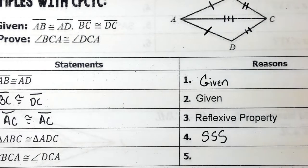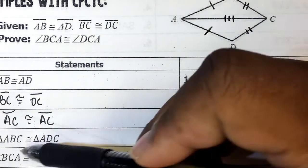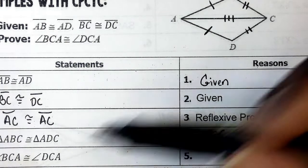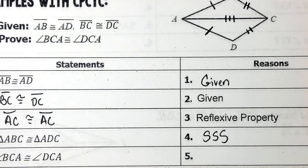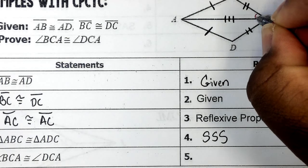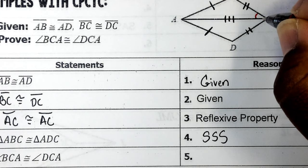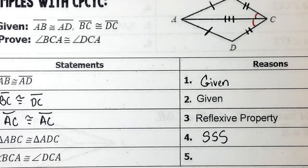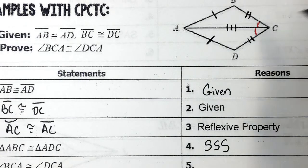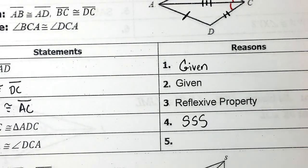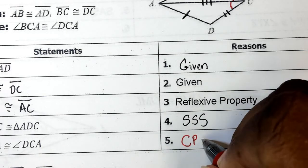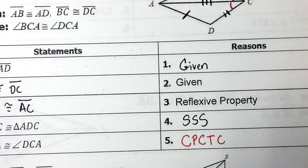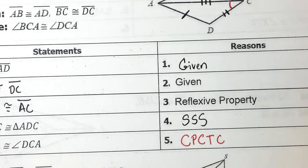After proving the triangles congruent by side-side-side, we can mention anything about any parts on this triangle that they want. They specifically want to talk about angle BCA — since we know these triangles are congruent, that means all corresponding parts are congruent. So this is where we make our CPCTC statement: angle BCA is congruent to angle DCA because of CPCTC — corresponding parts on congruent triangles are congruent. We proved the triangles to be congruent, so our corresponding parts have to be congruent.